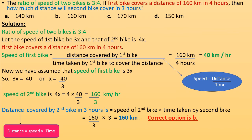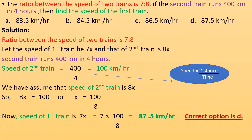The ratio between the speed of two trains is 7:8. If the second train runs 400 km in 4 hours, then find the speed of the first train. Let the speed of the first train be 7x and that of the second train be 8x. The second train runs 400 km in 4 hours, so speed of second train is 400/4 = 100 km per hour.